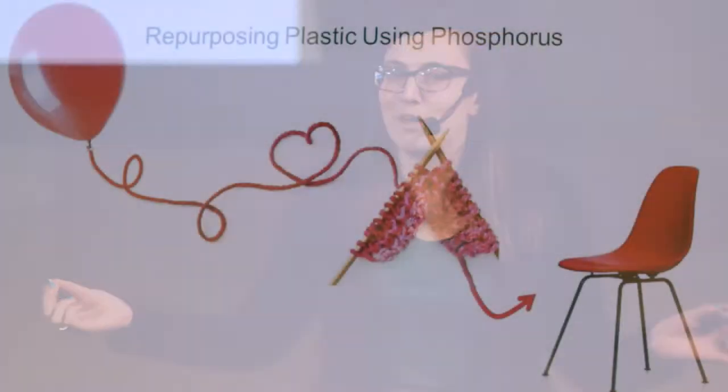To do so, consider the structure of plastic as being made from long pieces of string. In the same way that string can be knit into a more rigid structure, plastic chains can be connected in a process called cross-linking. For example, we could cross-link our rubbery balloon to make it more rigid like the plastic in the chairs that you are all sitting on.